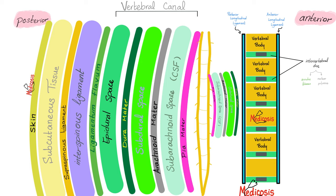Here is the back of the patient. Going deeper from the surface: skin, subcutaneous tissue, supraspinous ligament, interspinous ligament, ligamentum flavum — then the epidural space. Epidural means above the dura. After the dura: subdural, then arachnoid mater, then the subarachnoid space which has the cerebrospinal fluid.